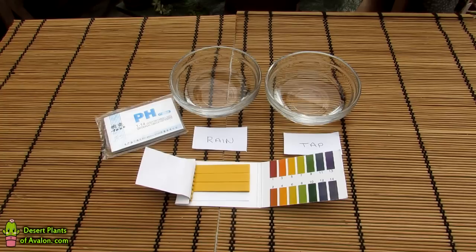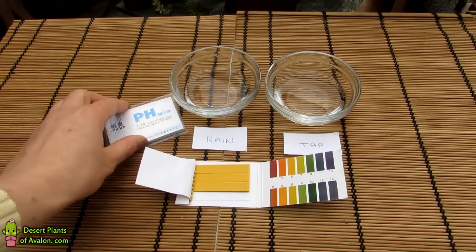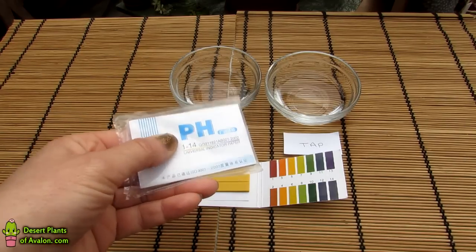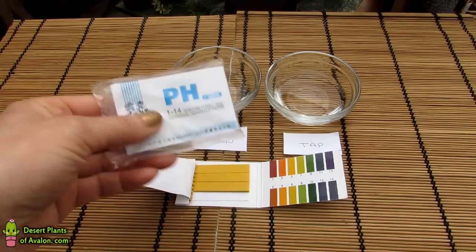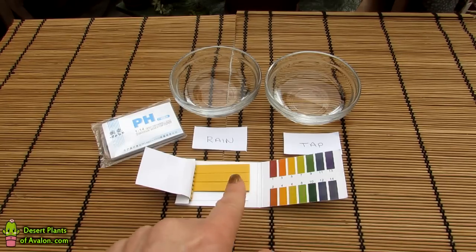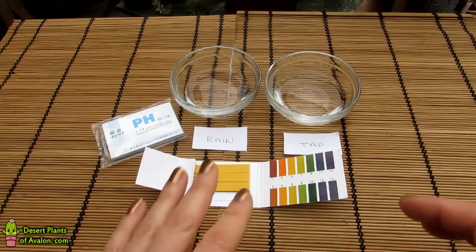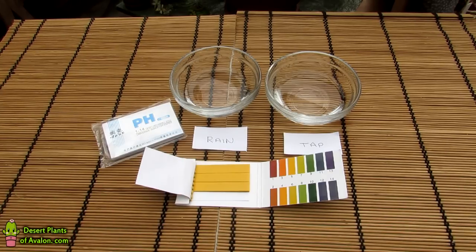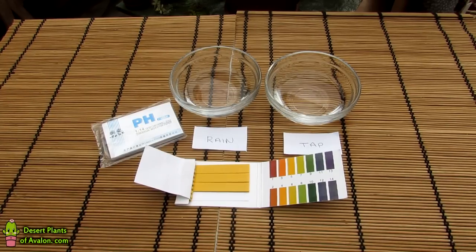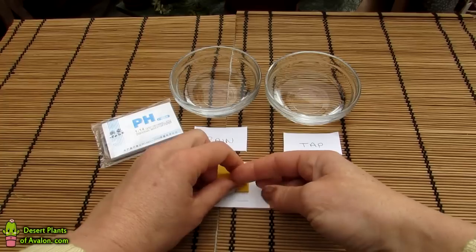How do you test your water? These kits here—I'll just show you—this is one I got off eBay. It's a pH universal indicator paper, and these are pretty cheap to buy. They're really easy, just like blotting paper. You dip them in, and it will tell you what the pH is of your tap water and rainwater. You can also use the ones that people use for fish keeping—any pet shop will have pH water testing kits.